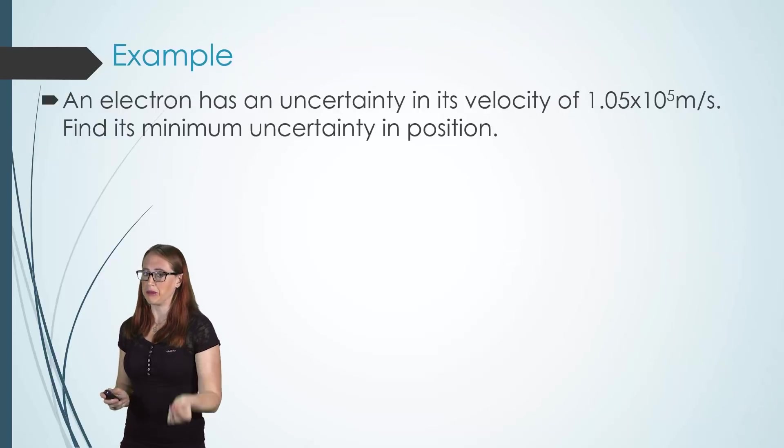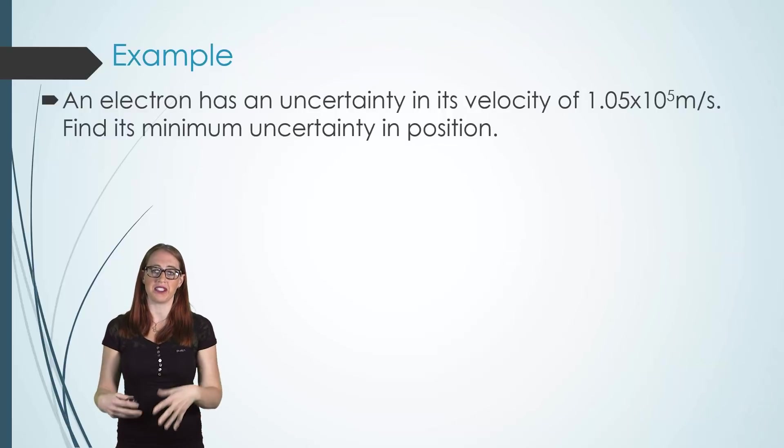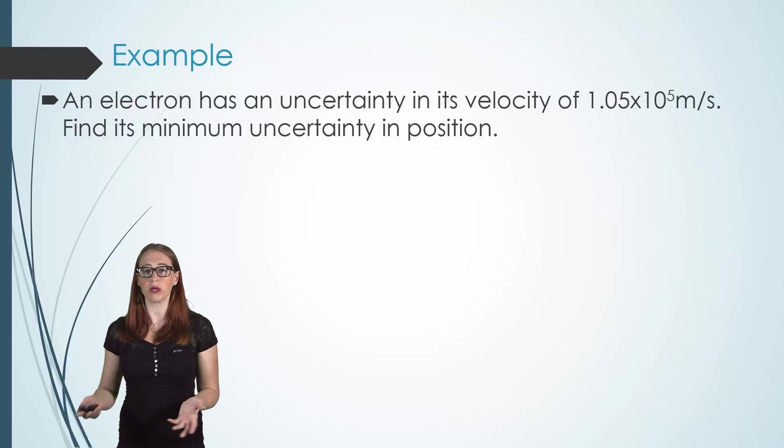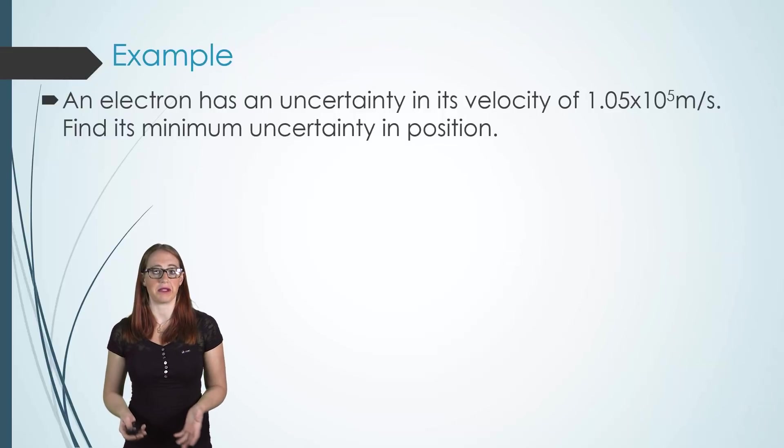Let's do an example of a more typical problem where we're talking about things where the Heisenberg uncertainty principle actually affects the situation. An electron has an uncertainty in velocity of 1.05 times 10 to the fifth meters per second. That's given by the problem. And I ask you to find its minimum uncertainty in position.